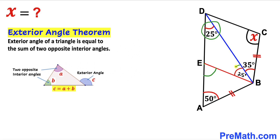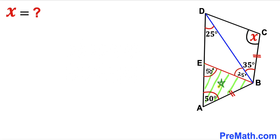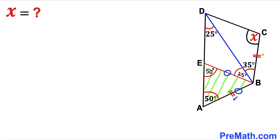Focusing on triangle ABE, we can see this is an isosceles triangle since the two base angles are equal. Therefore this side length is equal to this side length, and since these two side lengths are congruent, this third side length is going to be the same as well.